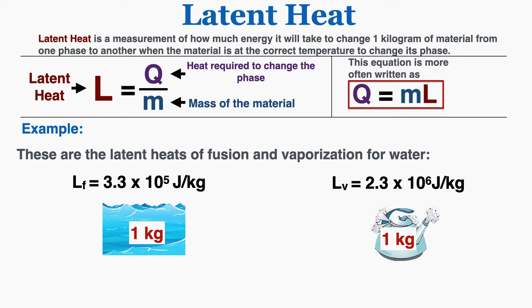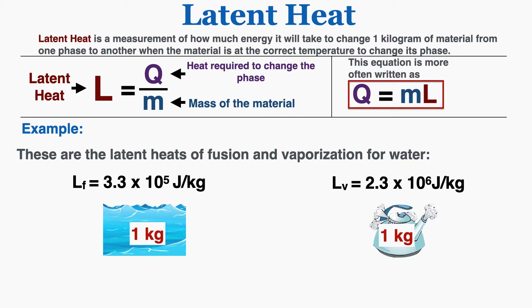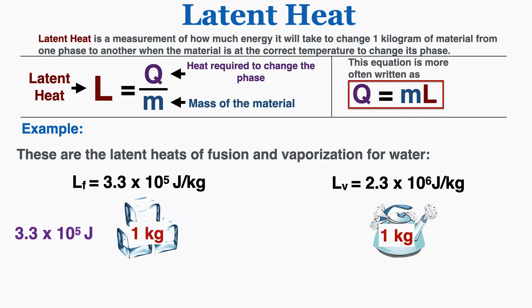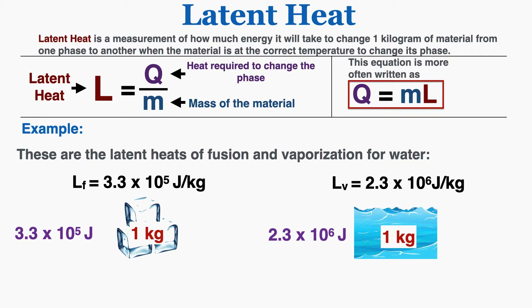The latent heat also tells me how much energy I would need to remove to change the phase in the opposite direction. So if I had 1 kilogram of water at its freezing point and wanted to convert it back to ice, I would need to remove 3.3 times 10 to the fifth joules. And if I had steam at its vaporization point and wanted to convert it back to water, I would need to remove 2.3 times 10 to the sixth joules of heat from the steam.